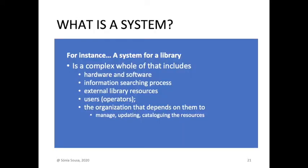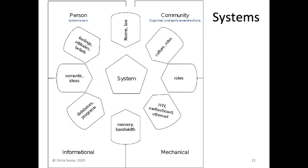So let's look at the library system. It has the hardware, the software, the information search engines. That can be inside of the computer, but there can also be a person: go to this shelf and you'll see this book, because I did the catalogation of the book. It has its users, operators, the librarian. It has the people that manage, update, and do everything. So a system can be an aggregation of people, an aggregation of informational sources, an aggregation of mechanical technology, or a community. Everything together is a system.